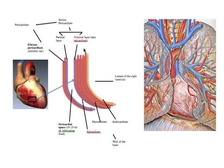The visceral layer of the serous pericardium is attached to the heart — 'visceral' referring to organ. Then there is the pericardial space filled with 10 to 15 milliliters of lubricating fluid. The parietal layer of the serous pericardium is the inner layer of the fibrous pericardium. So the serous pericardium has two parts — visceral and parietal — with the pericardial space in between. The fibrous pericardium is a tough, inelastic sac that surrounds and protects the heart, made of fibrous connective tissue that doesn't allow much flexibility.